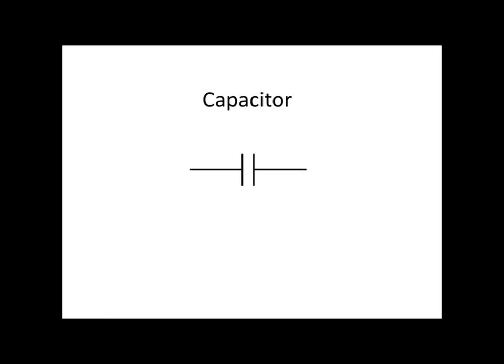In class, you'll almost always talk about a parallel plate capacitor, which is modeled by two sheets separated by air or some other insulator. In practice, capacitors are manufactured by sandwiching two long strips of metal between a dielectric and then rolling them up into a cylinder.